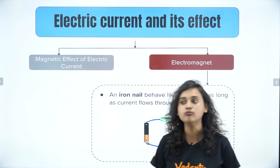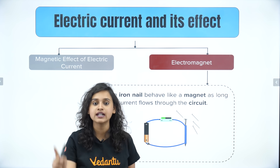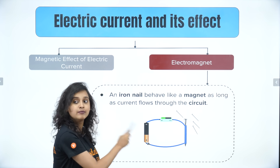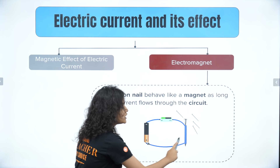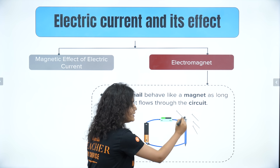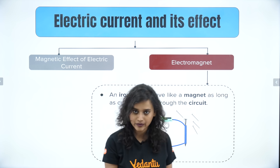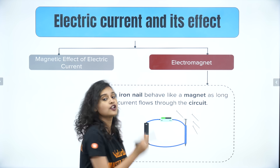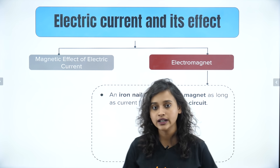Now let's understand electromagnets. An electromagnet is something that is magnetic in nature only when electricity is passing through the circuit. You connect a cell, a switch, and an iron nail — when you switch on, the iron nail starts attracting other magnetic materials. As soon as you switch off, it stops working as a magnet. So an electromagnet only works when electricity is there.